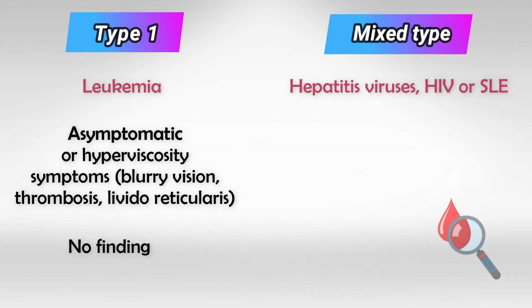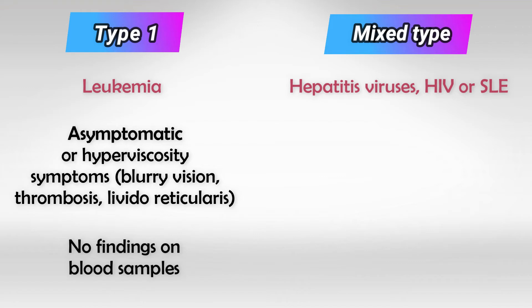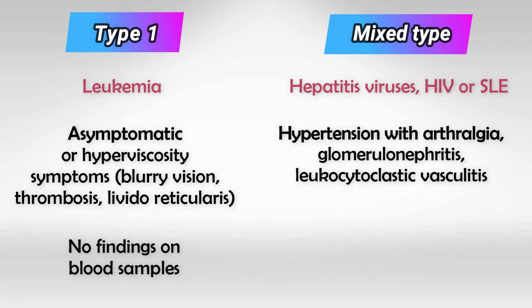A blood sample will be completely normal. The mixed type however is more severe and we see more symptoms. The hallmark is hypertension with arthralgia.